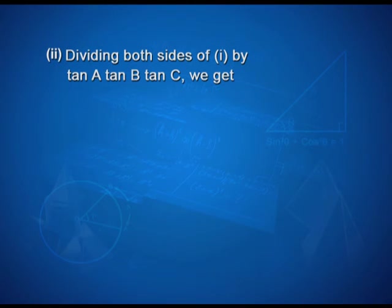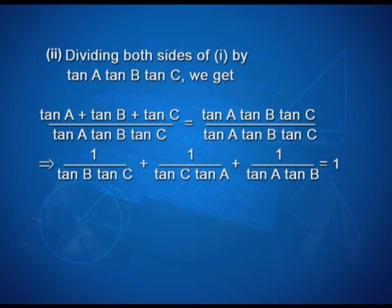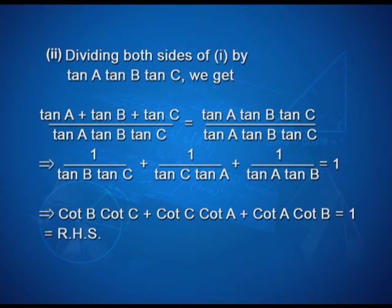For the second part, dividing both sides of the equation by tan A tan B tan C, we get (tan A + tan B + tan C) / (tan A tan B tan C) equals 1. This implies 1/(tan B tan C) plus 1/(tan C tan A) plus 1/(tan A tan B) equals 1, which gives cot B cot C plus cot C cot A plus cot A cot B equals 1, since cot θ equals 1/tan θ.